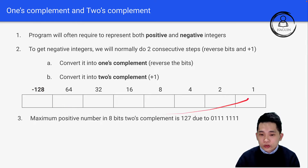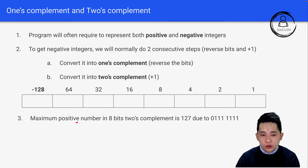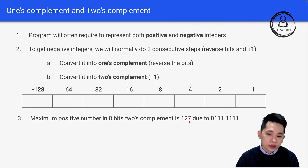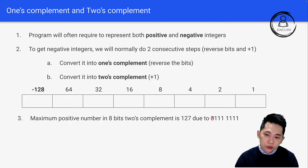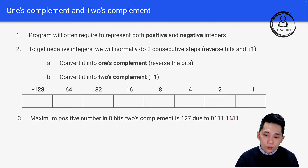This is very important for two's complement — you just have to remember that the 8th bit will always be negative 128. Therefore, using this table, we know that the maximum positive number in 8-bit two's complement form will be 127, due to the most significant bit being zero. The remaining bits will all be one: 0,1,1,1,1,1,1,1, which equals 127.